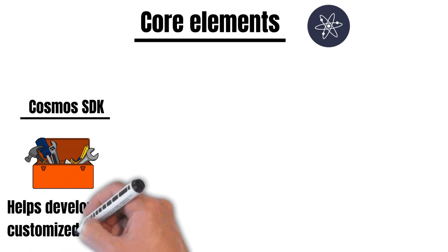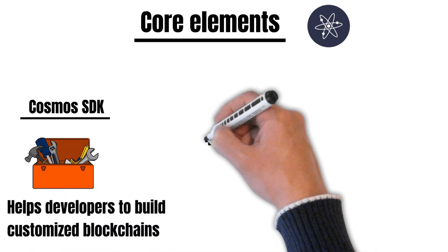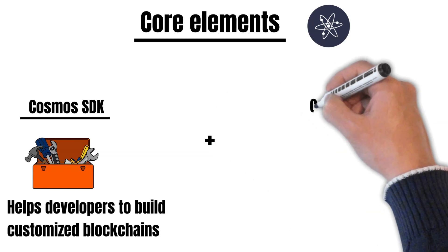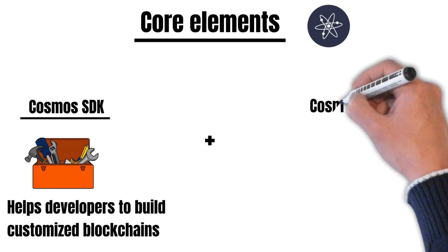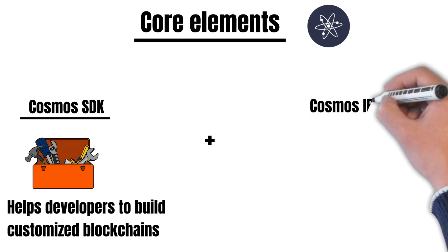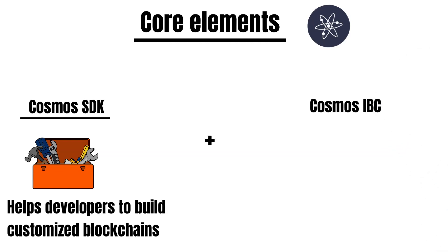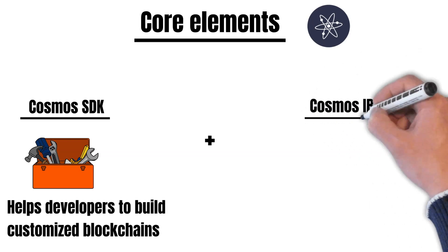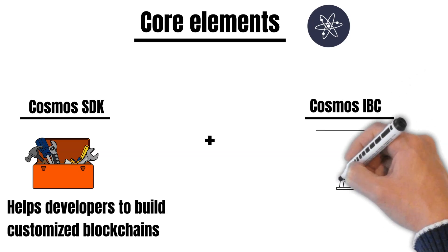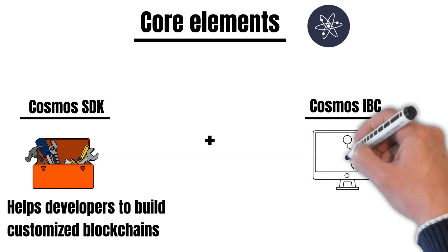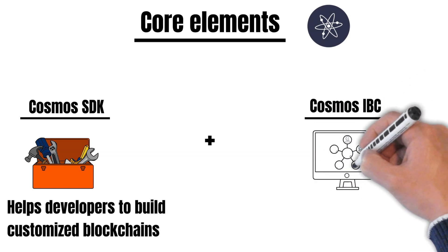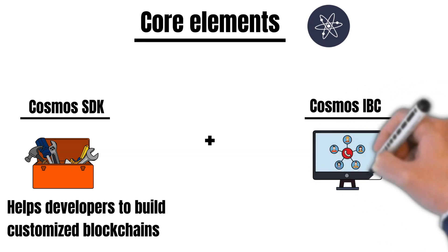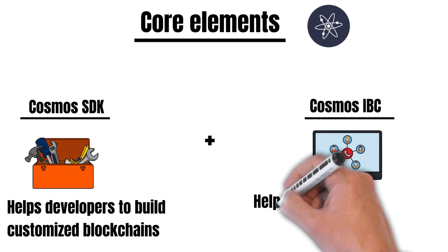And secondly, IBC. Once you build your blockchain with the Cosmos SDK, it's time to connect to the rest of the Cosmos ecosystem. IBC is a standardized communication protocol for blockchains — that's how blockchains are able to talk to each other. For example, using IBC, you can easily transfer tokens from one blockchain to the other without any issues. IBC is a permissionless protocol and can be implemented in any fast finality chain.